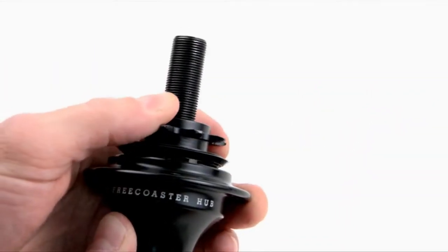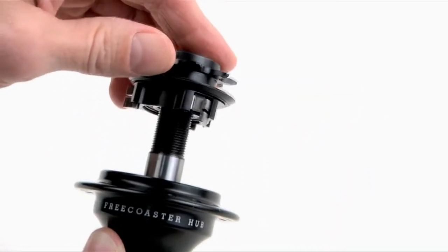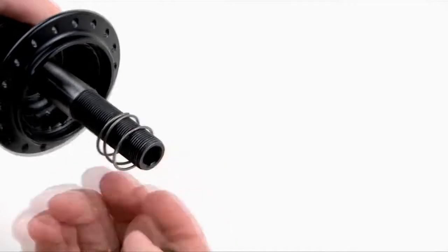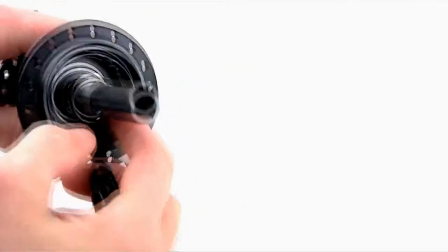Slowly wiggle and pull the driver off of the axle. The clutch disc and spring might still be in the hub. Remove the clutch disc. If the spring comes out, simply slip it back onto the axle and into the hub.